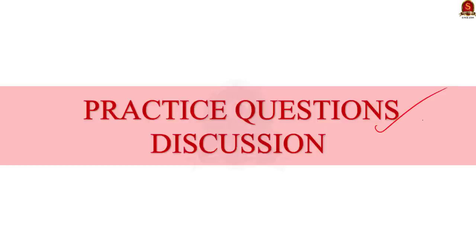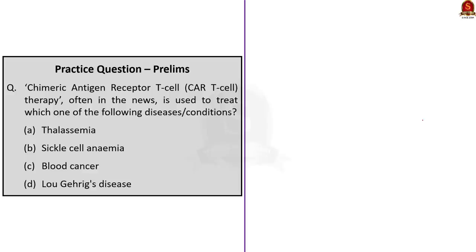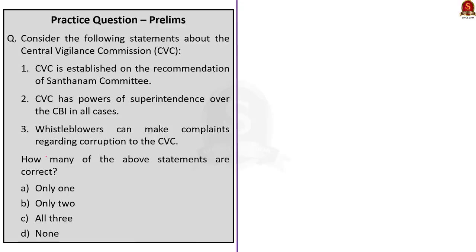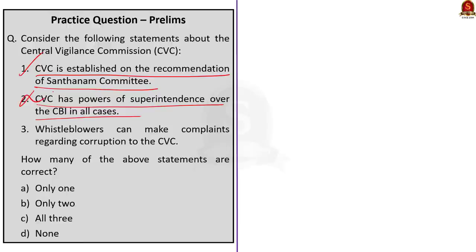Practice Question 1: CAR T-cell therapy, often in the news, is used to treat which disease? The correct answer is option C — blood cancer. Practice Question 2: Regarding CVC, three statements are given. Statement 1 — CVC is established on the recommendation of the Santhanam Committee — is correct. Statement 2 — CVC has powers of superintendence over the CBI in all cases — is incorrect; CVC's superintendence over CBI is only in relation to the Prevention of Corruption Act 1988. Statement 3 — whistleblowers can make complaints regarding corruption to the CVC — is correct. Correct answer: option B, only statements 1 and 3.